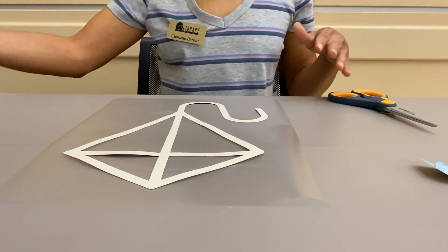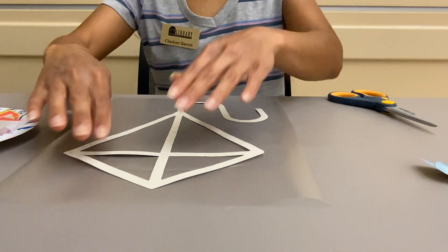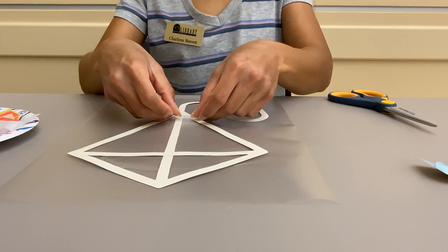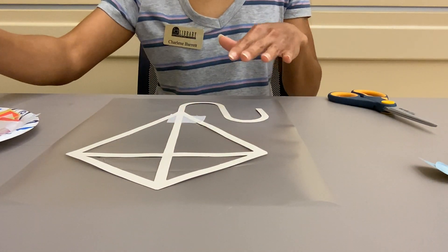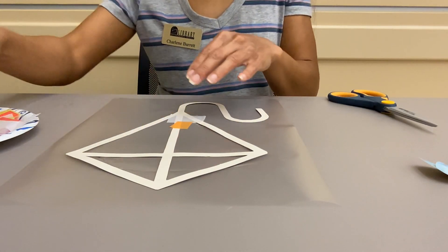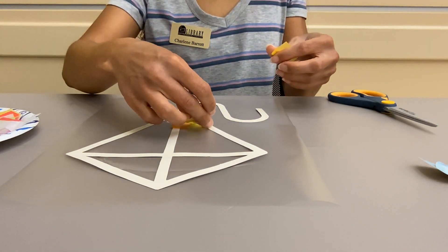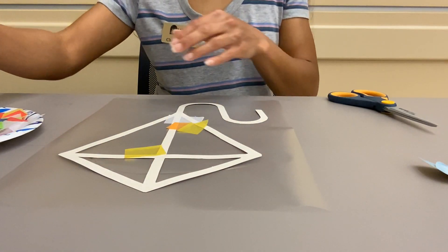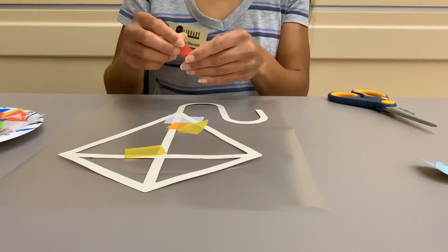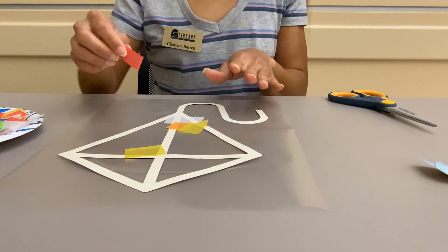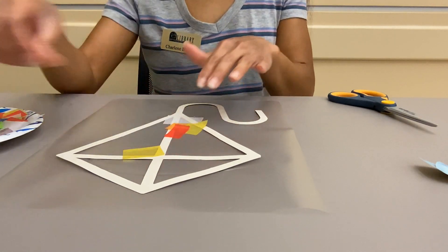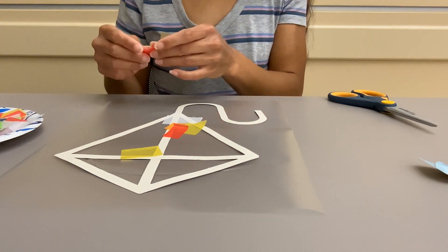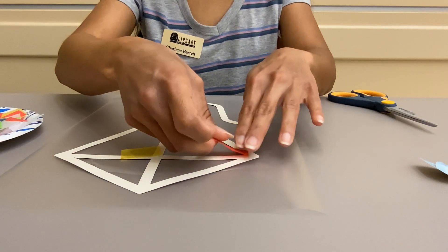Then you're going to take your tissue paper squares and you're just going to start to fill in your kite. And you can do this however way you want. I am just going to make it all different colors, but if you want to do one side red and the other side blue or go with a certain theme, you can do that.